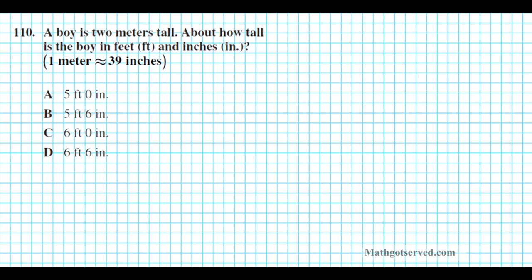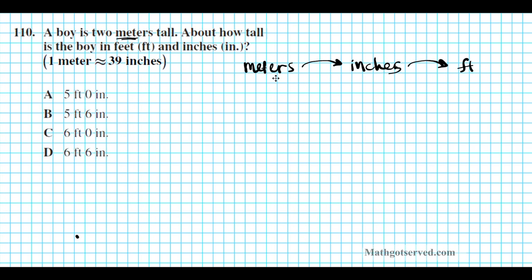Let's take a look at number 110. A boy is two meters tall. About how tall is the boy in feet and inches? In this problem we're going from meters to inches and then to feet — a combination of feet and inches. We're going to go from meters to inches first, because we are provided with a conversion factor from meters to inches, and then from inches to feet.